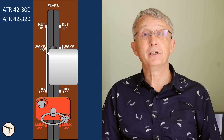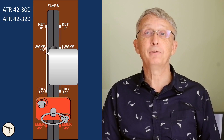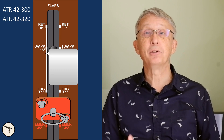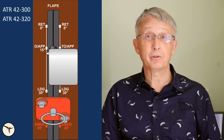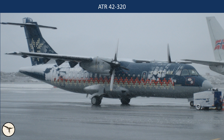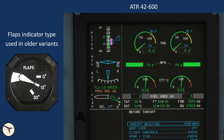As a side note, the 42-300 has flaps 0, 15, 30 and 45. The flaps 45 position is blocked and is only allowed to be used for emergency landing in normal atmospheric conditions. The reason is the risk of tailplane stall with ice on the horizontal stabilizer. Since the variants have different flap positions, the flap indicators are different as well.